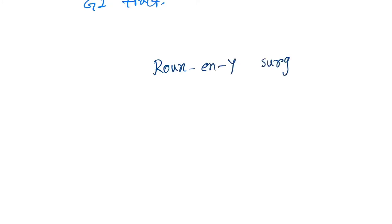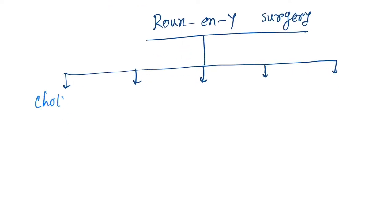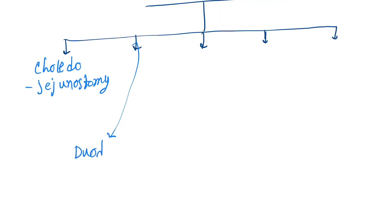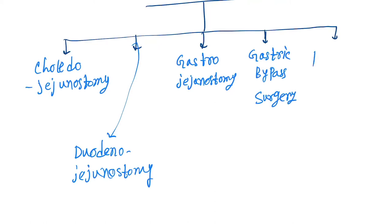We have five main types of Roux-en-Y surgery. The first one is choledochojejunostomy, next is duodenojejunostomy, then gastrojejunostomy, then gastric bypass surgery, and the last one is pancreatic bypass surgery.